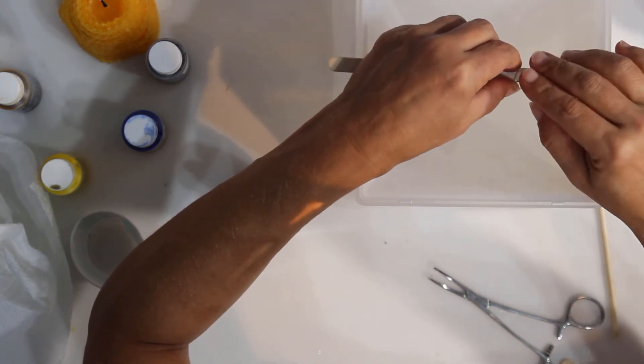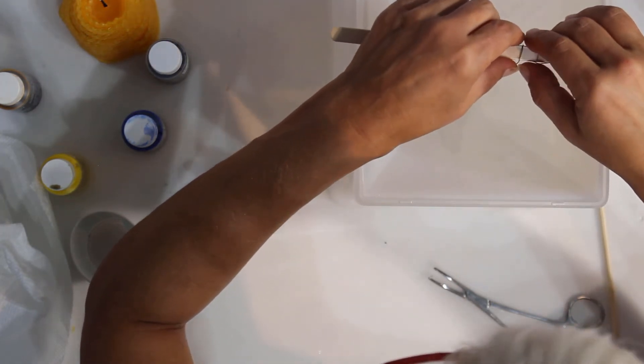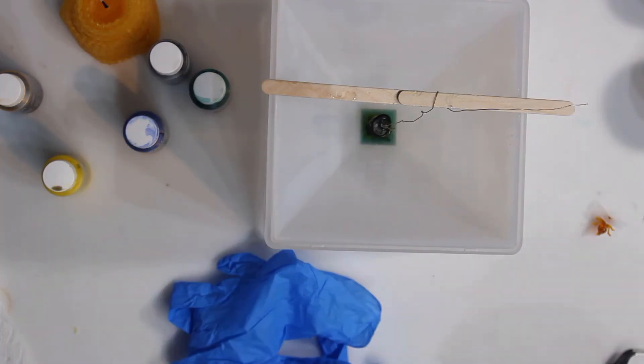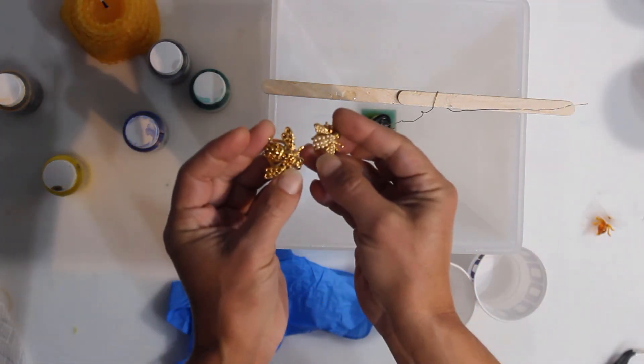Once the crystal is suspended, I'll be filling the pyramid with clear resin, placing our bees in a staggered fashion. Once the resin around the crystal is cured enough to keep it in place, the suspension apparatus is removed.